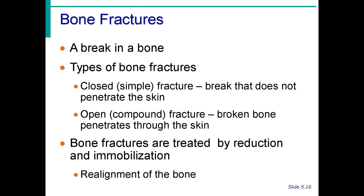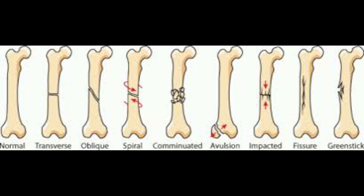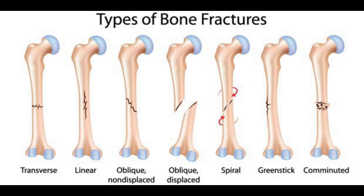A bone fracture is a break in the bone. There are two major types: closed and open. In a closed fracture, the bone does not penetrate outside the skin. In an open fracture, the bone penetrates outside the skin. There are also several different specific types of bone fractures.